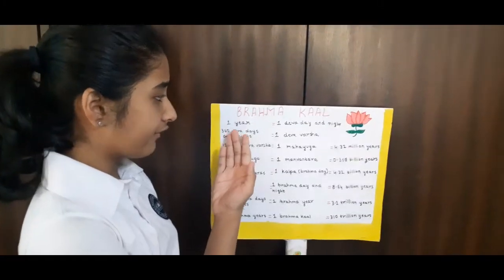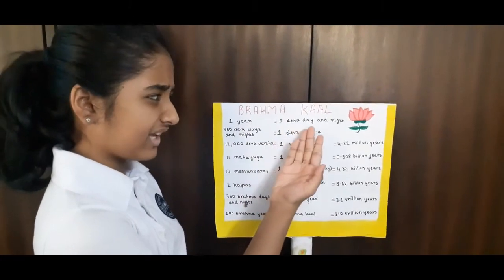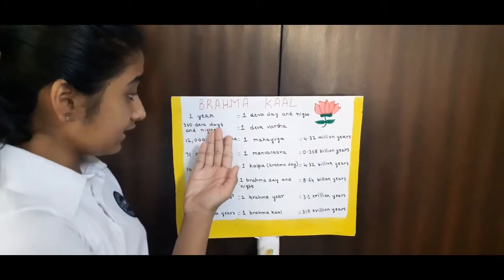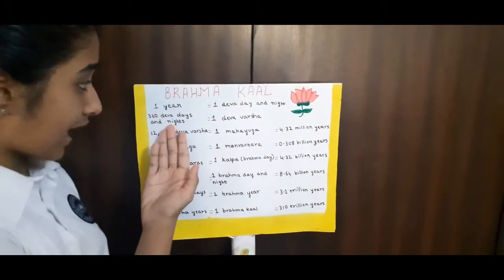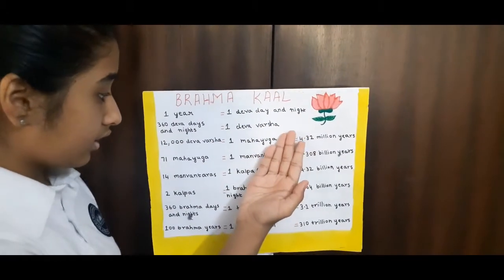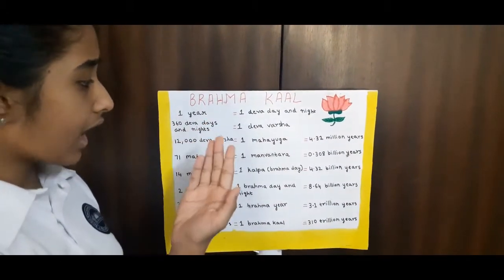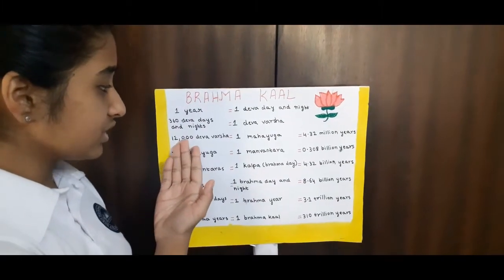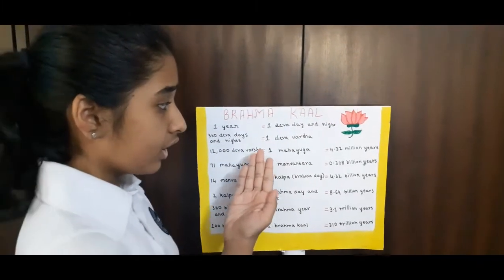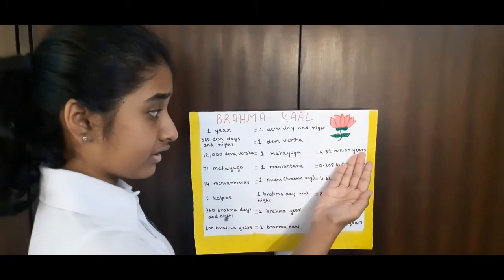Do you all know that our one year is just one Deva day and night? And 360 Deva days and nights is one Deva Varsha, or year. And one Maha Yuga, like Kali Yuga, is 12,000 Deva Varsha, or year, which is 4.32 million years.